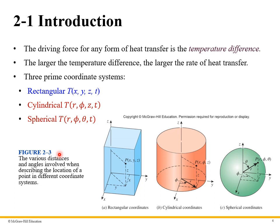We're going to look at three coordinate systems: the rectangular coordinate system, where temperature is a function of x, y, z, and t; the cylindrical coordinate system with r, phi, and z; and finally spherical coordinates with r, phi, theta, and t. Heat transfer is a function of time — it can change — though we'll look at steady-state cases where it doesn't.